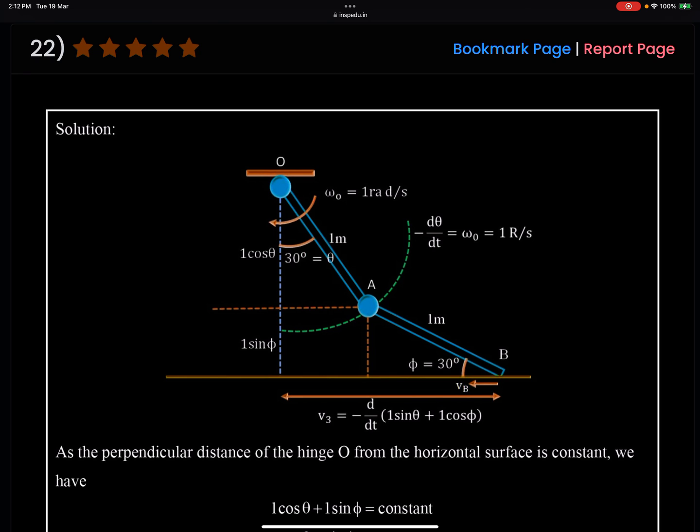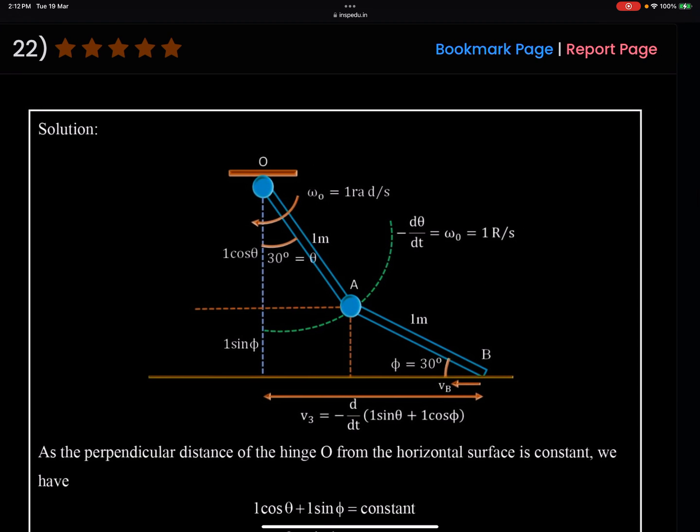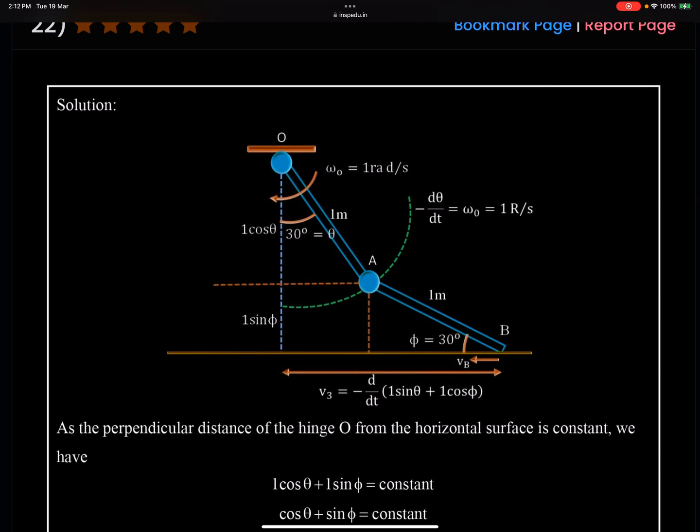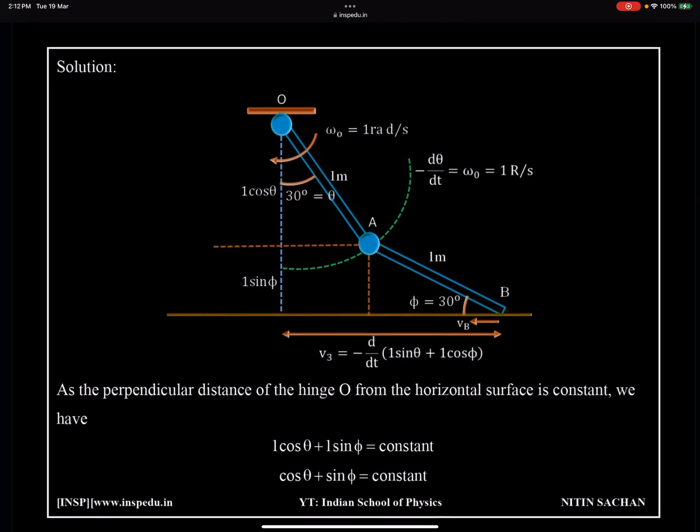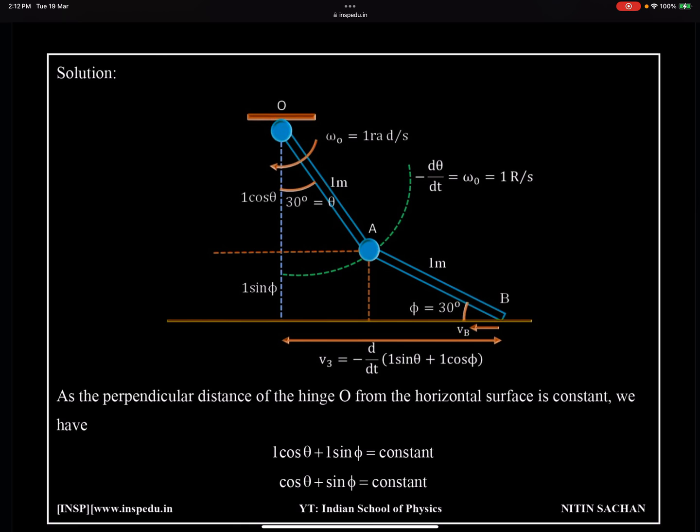And point B velocity will be this horizontal distance, which is a derivative of 1 sin theta 1 cos phi. So here this length you can see from the top, it is 1 cos theta and 1 sin phi. So this distance itself we can say it has to be constant no matter how these two rods are moving. This distance is going to be fixed all the time. So we are going to use this 1 cos theta plus 1 sin phi equal to constant or cos theta plus sin phi is a constant. This is going to be the constraint for us.